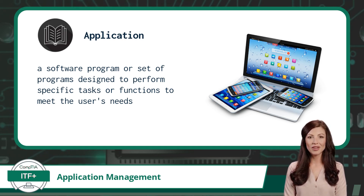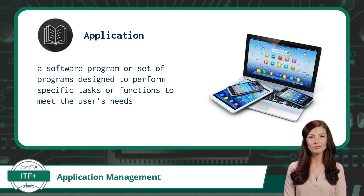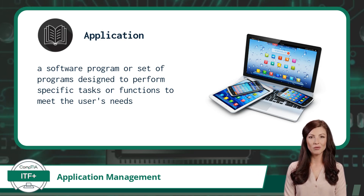The operating system manages these processes to ensure efficient use of resources and to prevent interference between them. In summary, an application is the software, while a process is the running instance of that software on the computer.